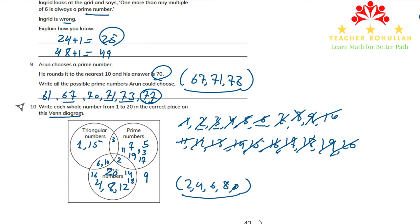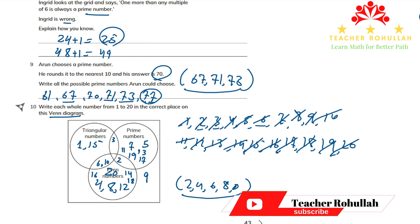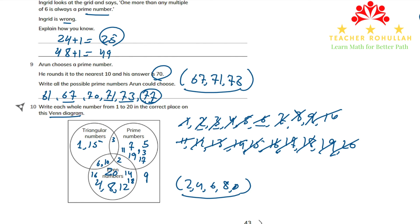We are done placing all numbers correctly. To summarize: 1 and 15 are only triangular; 3 is between prime and triangular; 6 and 10 are between even and triangular; 2 is between even and prime. We are done with all questions of exercise 3-3 of Cambridge Primary Mathematics Workbook 5. Please subscribe, like, and share the video. Thank you!